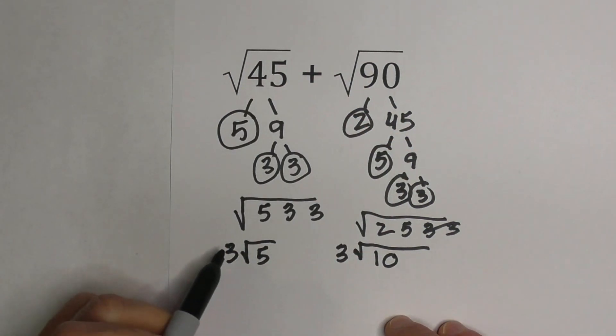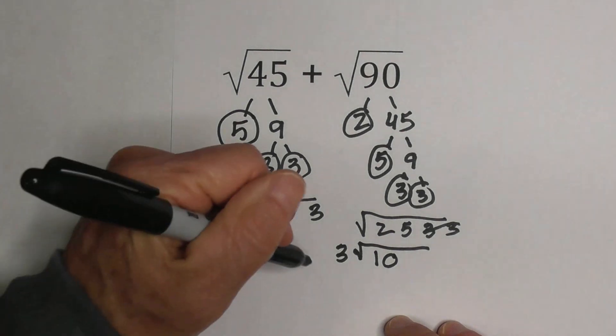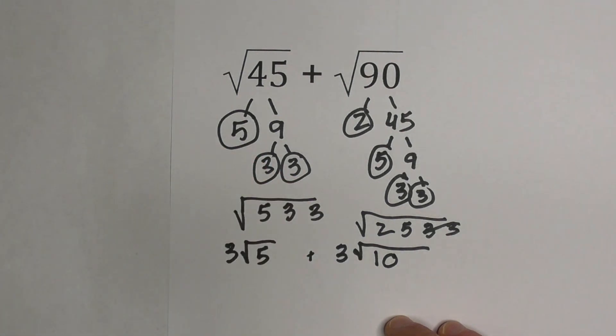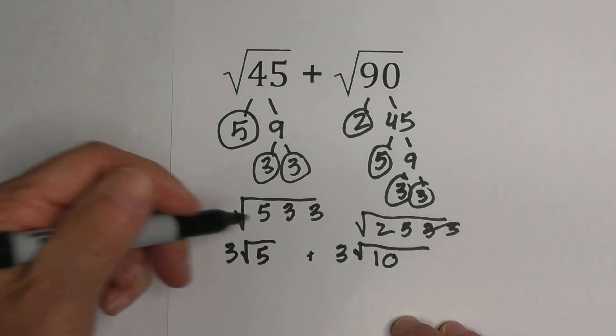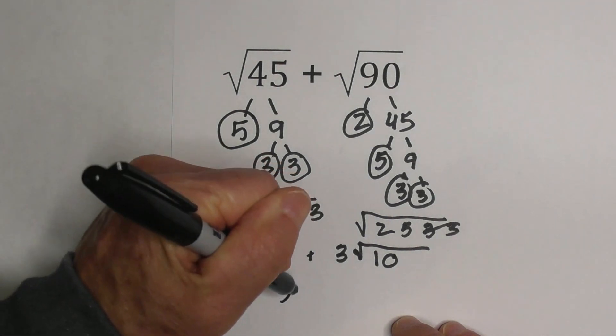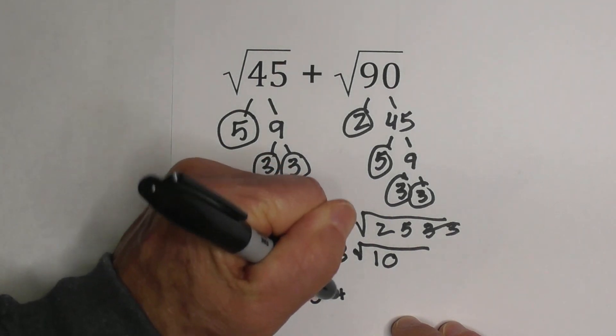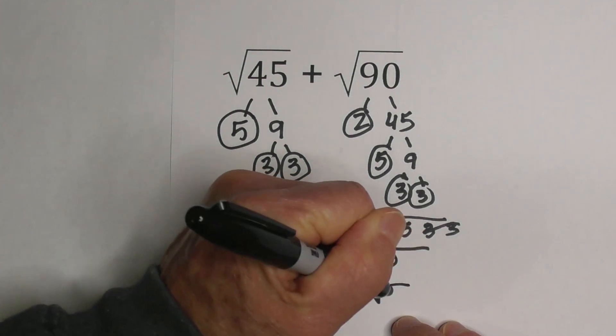We have 3√5 plus 3√10. At this point you would combine like terms, but we don't have any like terms, so it becomes 3√5 plus 3√10 because you don't have any like terms.